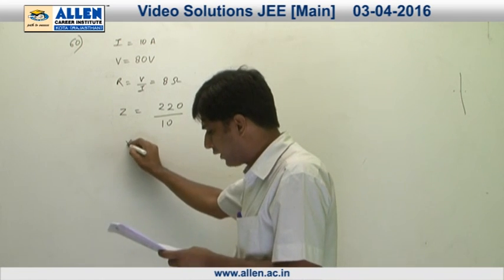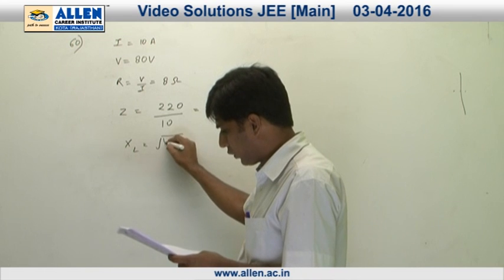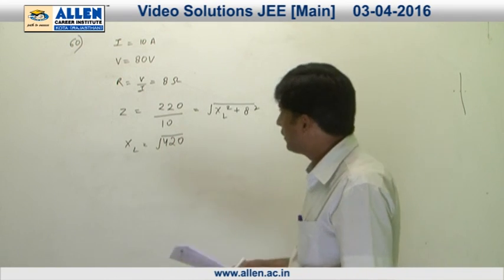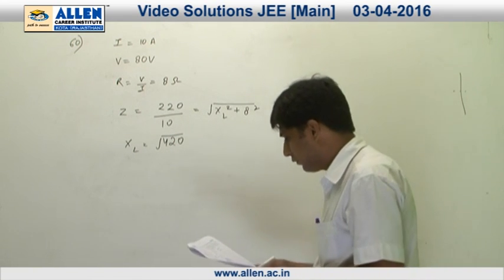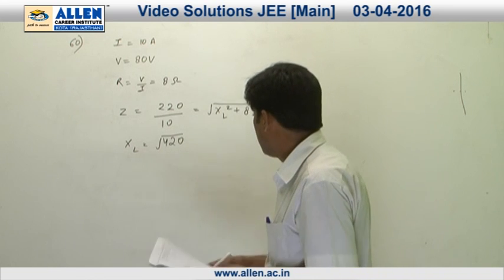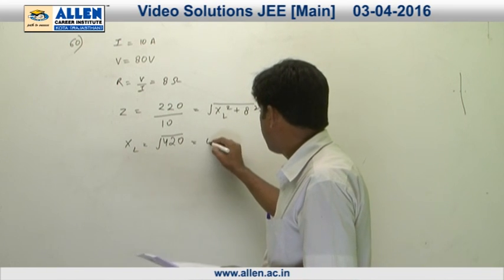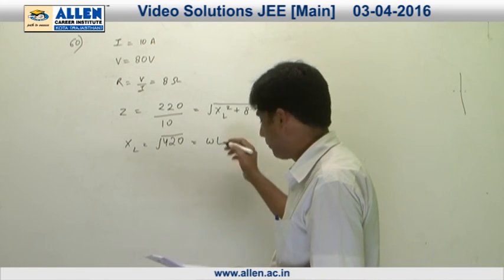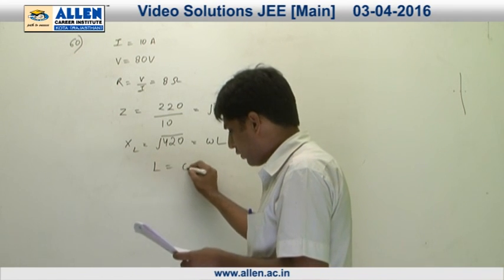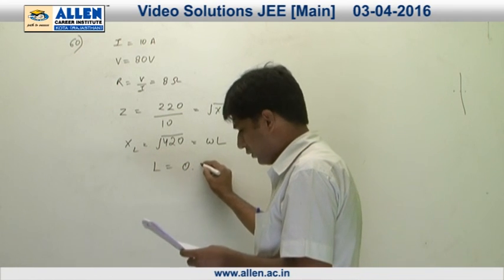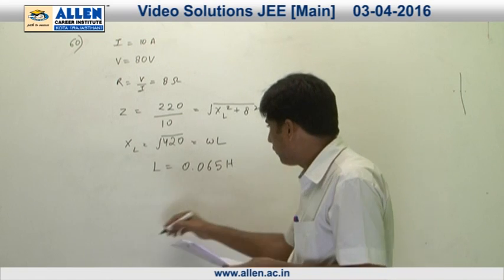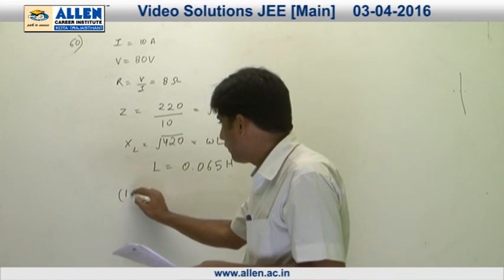From here, we get the value of XL = √420. Since the frequency given in this question is 50 Hz, on putting the value of frequency in ωL, we get the value of L which comes out to be 0.065 Henry. Therefore, the correct answer is 1.